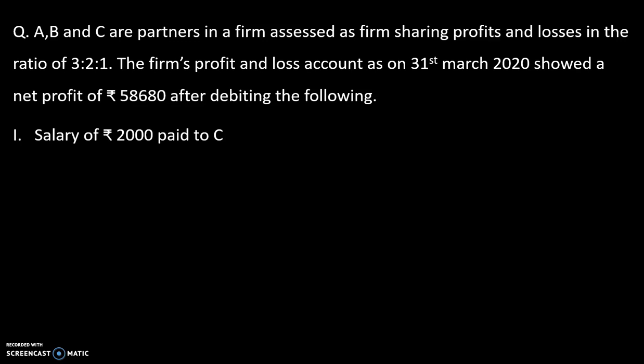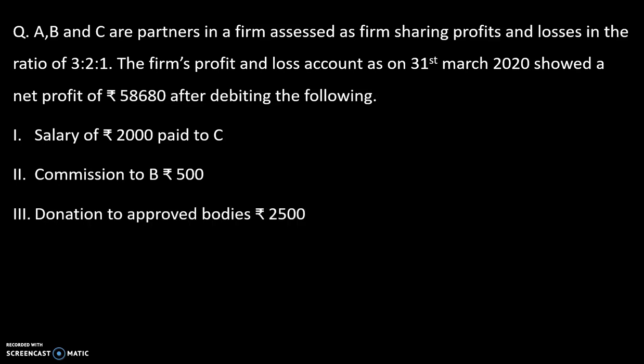The items already deducted include: salary of Rs. 2,000 paid to C, commission to B of Rs. 500, and donation to approved bodies of Rs. 2,500.